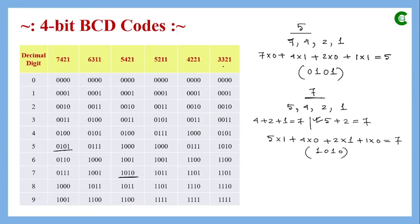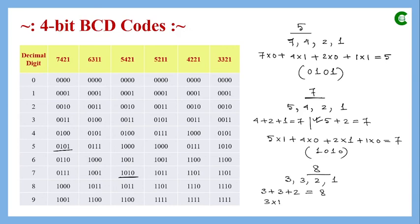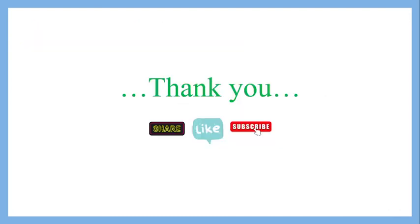In the 3-3-2-1 weighted code, to represent decimal 8, we need 3+3+2=8, using three bits set to 1. The combination is 1110: 3×1 + 3×1 + 2×1 + 1×0 = 8. This is the only workable combination since two bits alone cannot sum to 8 with these weights.